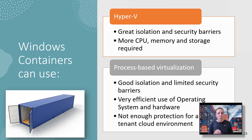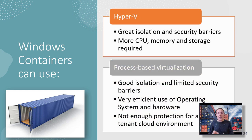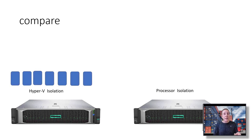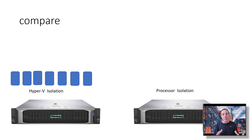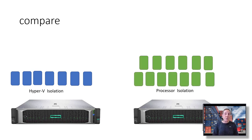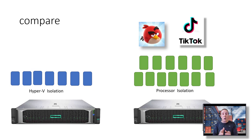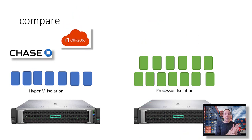Windows containers can run in Hyper-V or in processor-based virtualization. Looking at the advantages and disadvantages: with two physical servers running Windows Server, the one with Hyper-V has each container isolated via Hyper-V. Because an operating system must be inside every container, they take up more space and you can run fewer on the server. With processor isolation containers, you can run a lot more containers on the same physical server, which is suitable where security isolation is less critical. With Hyper-V, security and isolation between containers is more important.